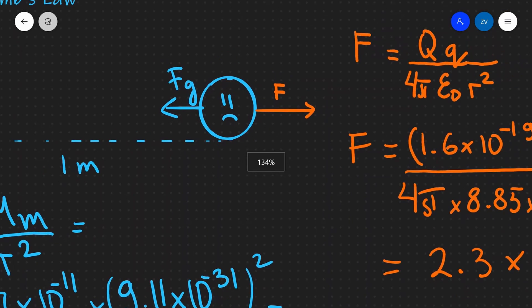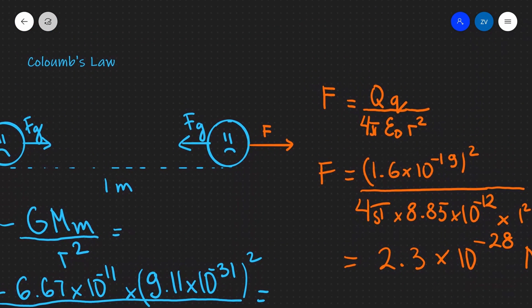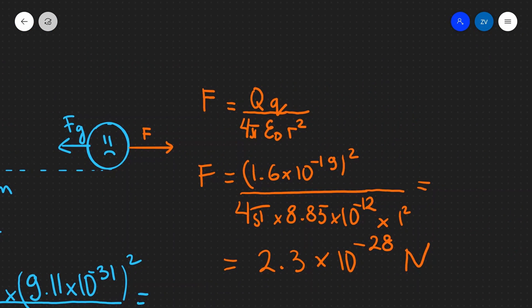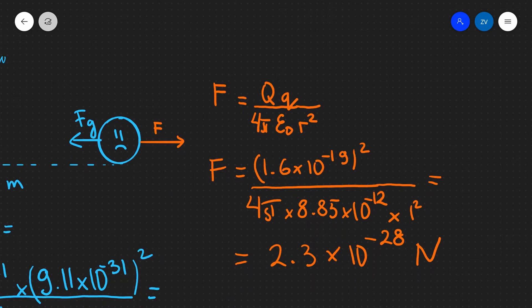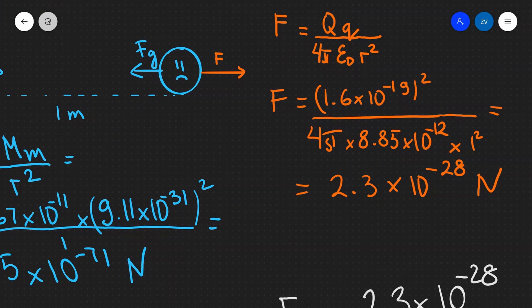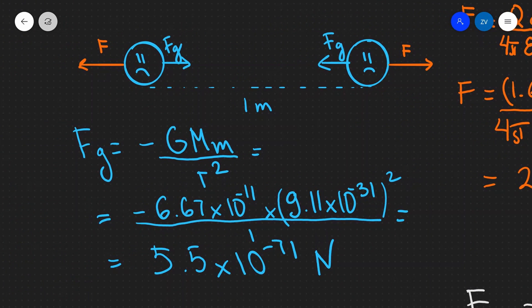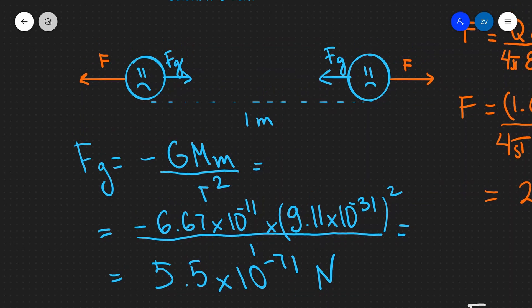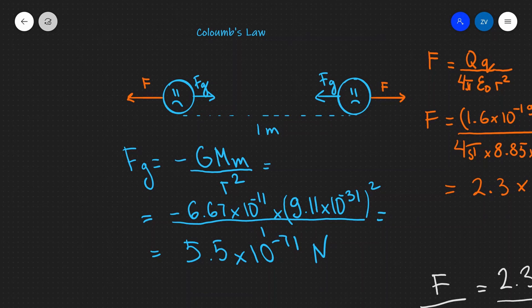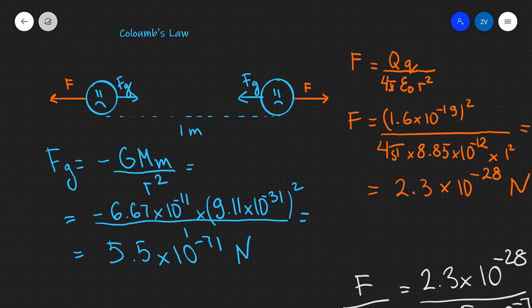Okay folks, so just to recap what we've done in this video is we've introduced Coulomb's law, F equals qq divided by 4 pi epsilon 0 r squared. We've applied this to an example of two electrons which are a meter apart, then we've compared it to the gravitational force and we've deduced that the electric force is so much stronger.